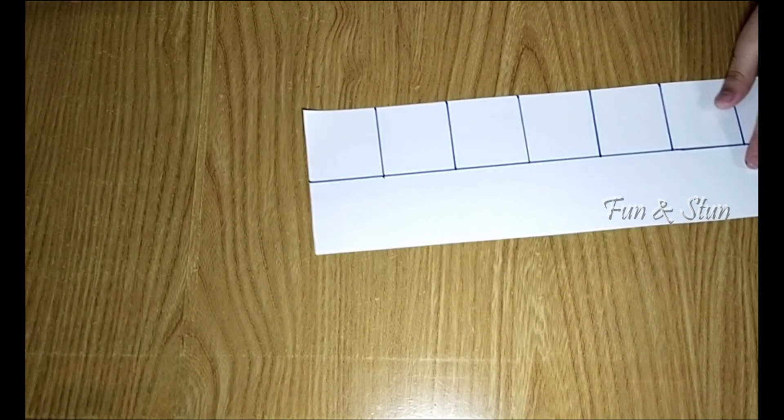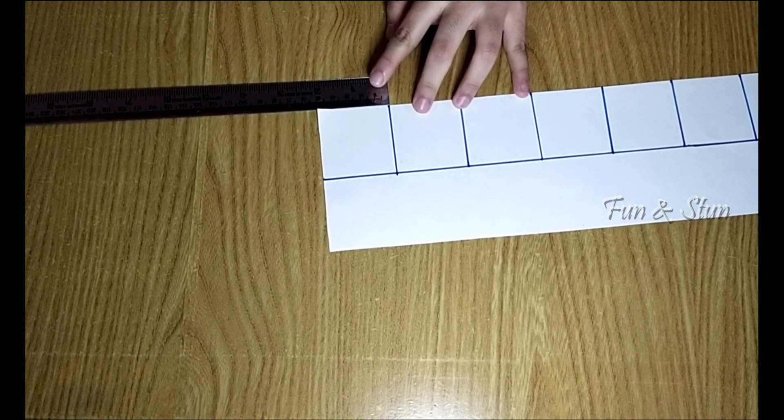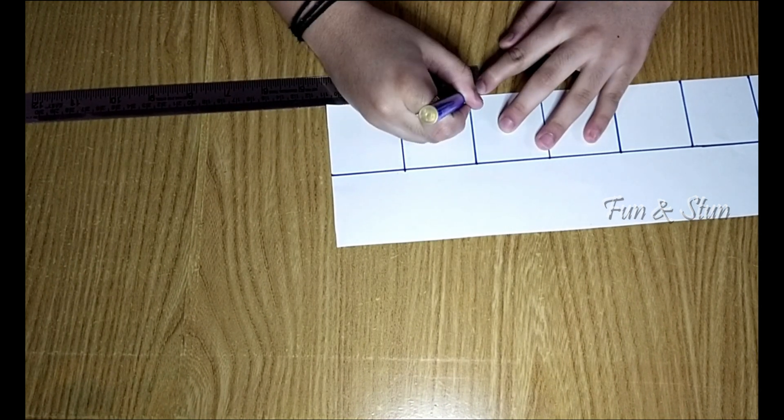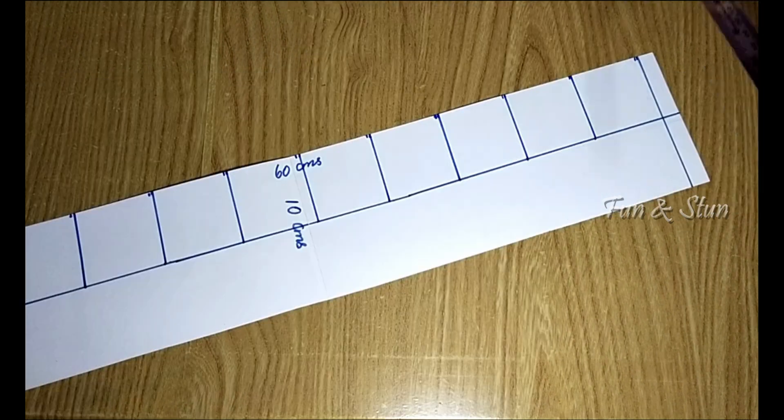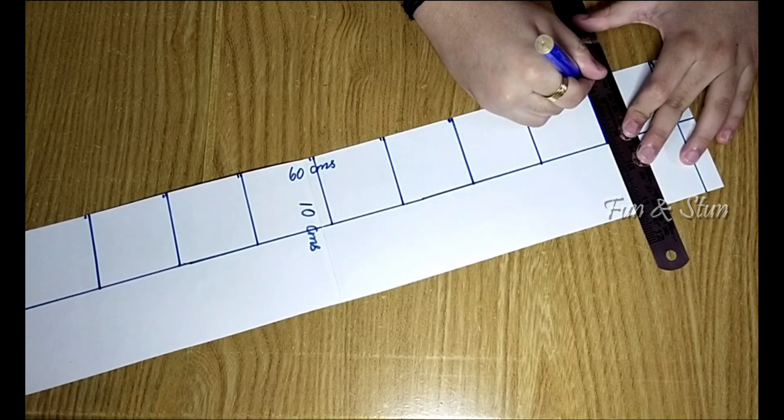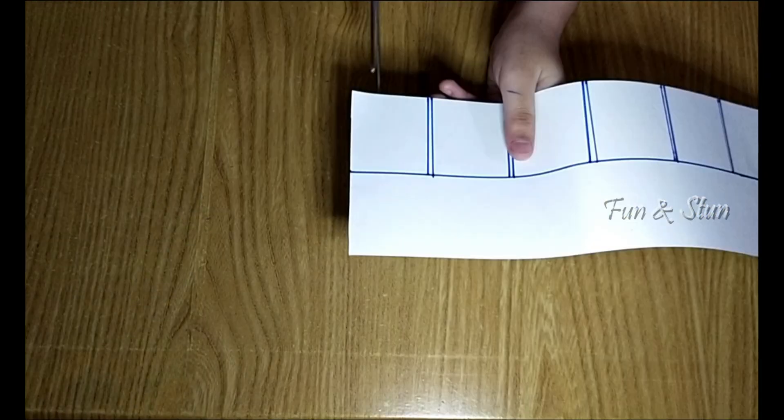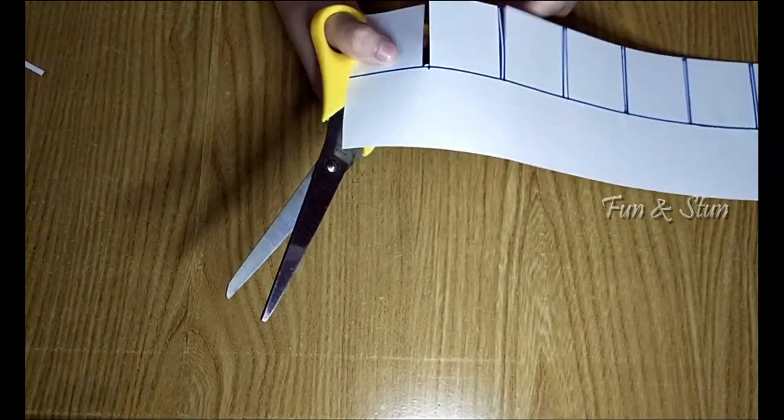Once you have divided the sections, you have to do small slits which will help you to see the animation that happens. To make slits, mark a point at 2 millimeters from the marked line. Then join the newly marked point to the middle line. Now let's cut out the slits. Be careful, don't cross the line.